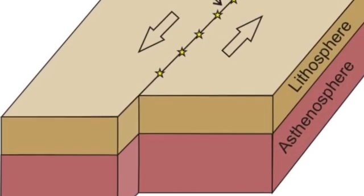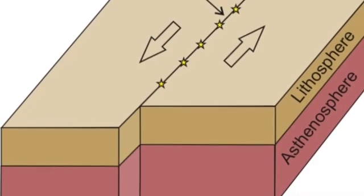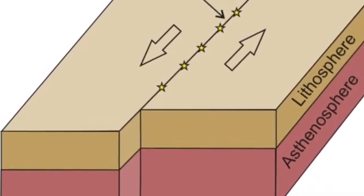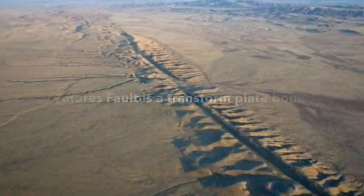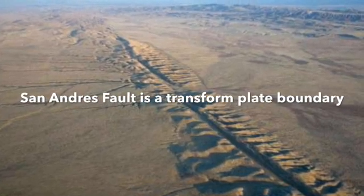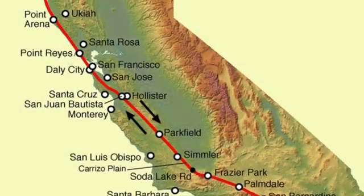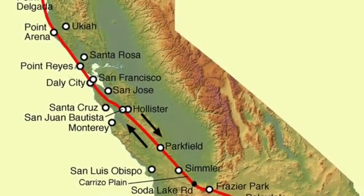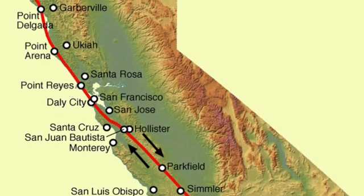Transform plate boundaries are when two plates move past each other in opposite directions. This results in massive earthquakes. For example, with the San Andreas Fault, the Pacific plate is moving relative to the North American plate — that is why it's a transform boundary.